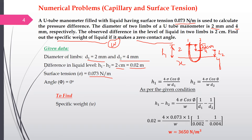Surface tension is given and contact angle is 0 degrees. We need to find the specific weight w. Using the capillary action formula, h1 = 4σ·cos(φ)/(w·d1) and h2 = 4σ·cos(φ)/(w·d2). The difference h1 − h2 = (4σ·cos(φ)/w)·(1/d1 − 1/d2).